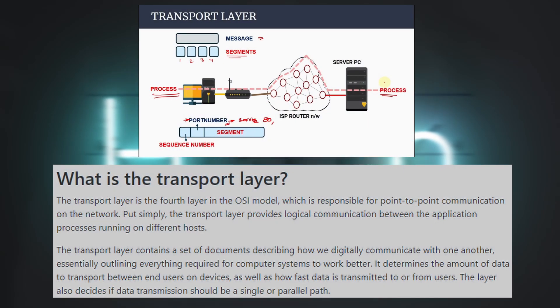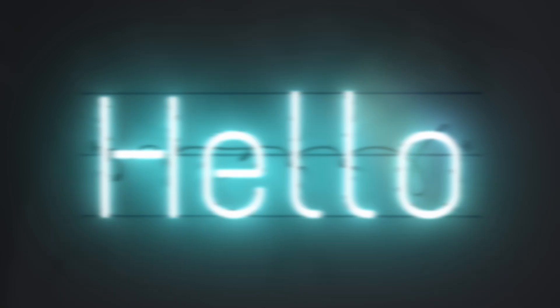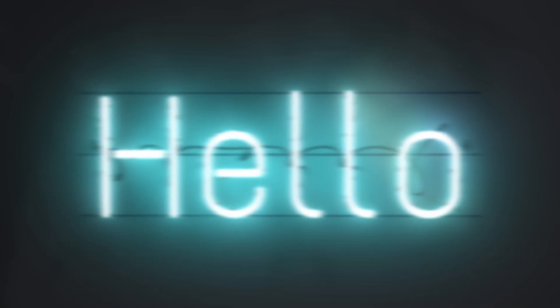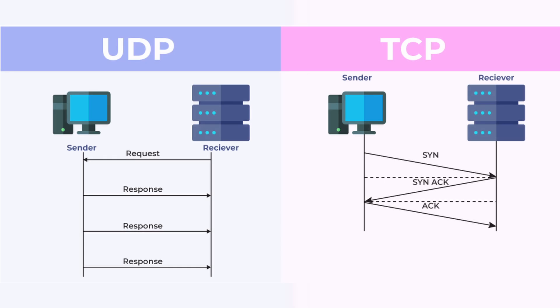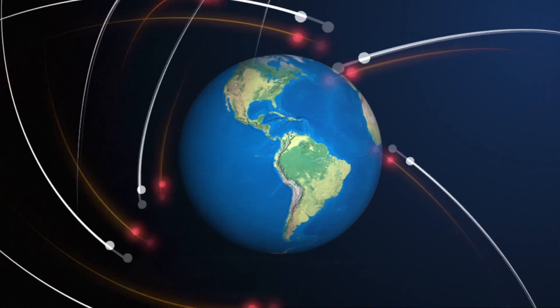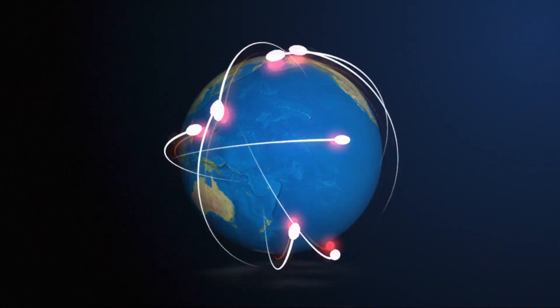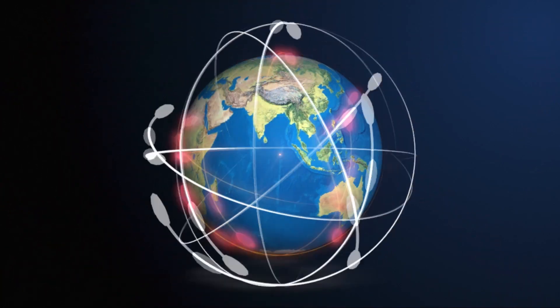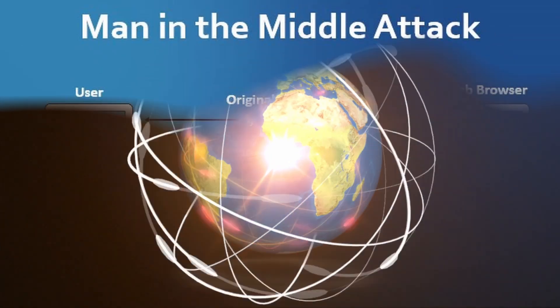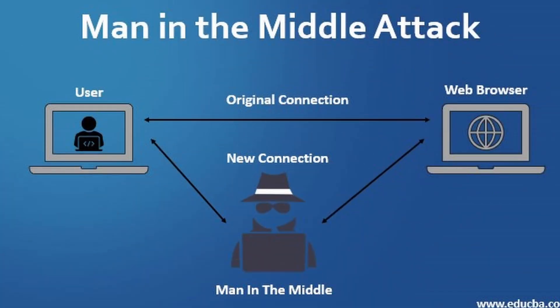On to layer four, the transport layer. This layer ensures that data is delivered reliably or quickly, depending on whether it uses TCP — transmission control protocol — or UDP — user datagram protocol. Think of it as packaging and ensuring the right amount of data is sent at the right time. In cybersecurity, this layer is vulnerable to attacks like port scanning or man-in-the-middle attacks, which can intercept or manipulate data packets in transit.